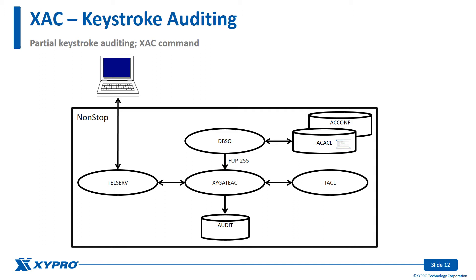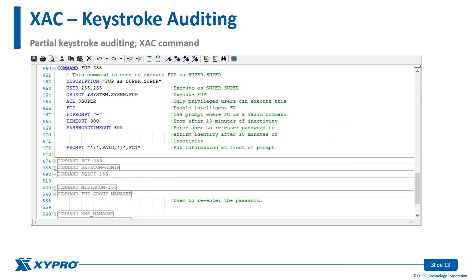In this example, the user needs access to FUP as SuperSuper. The FUP255XAC command provides this access to authorized users. The FUP255XAC command causes a FUP process to be started as SuperSuper.